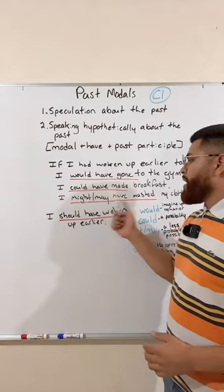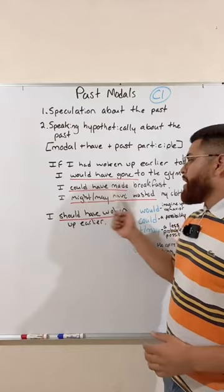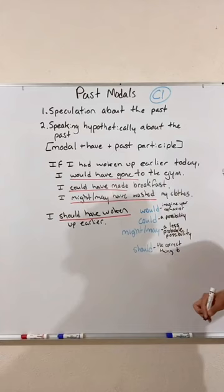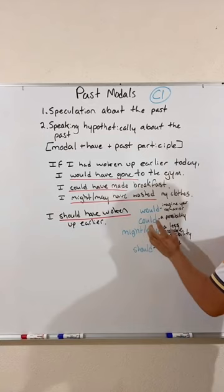Instead of 'might have,' you can say 'mighta.' 'May have' — that doesn't work, you have to say 'may have.' And 'should have' — you could say 'shoulda.' There is no significant difference between 'might' and 'may' besides the fact that 'may' sounds just a bit more formal than 'might.'